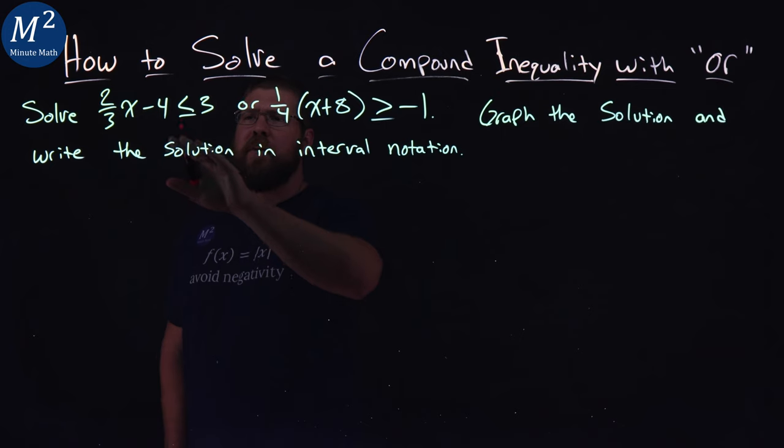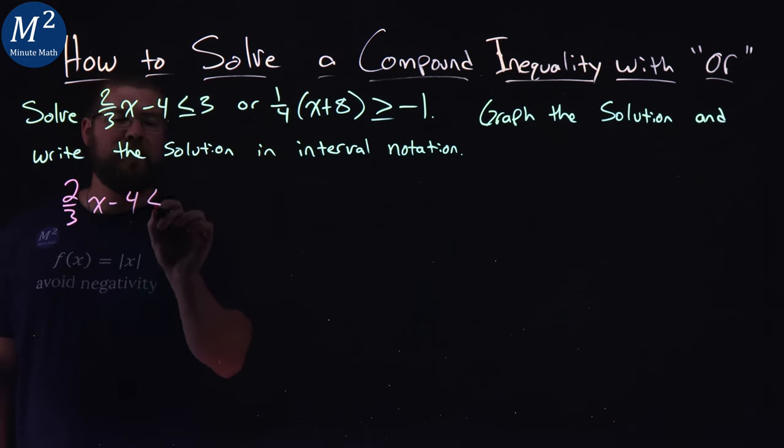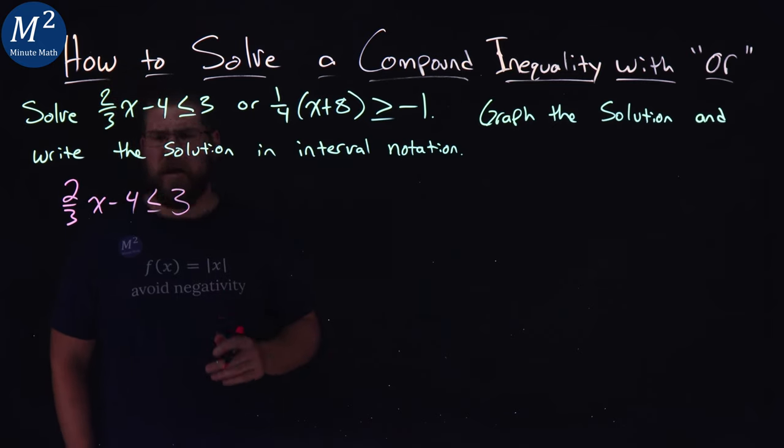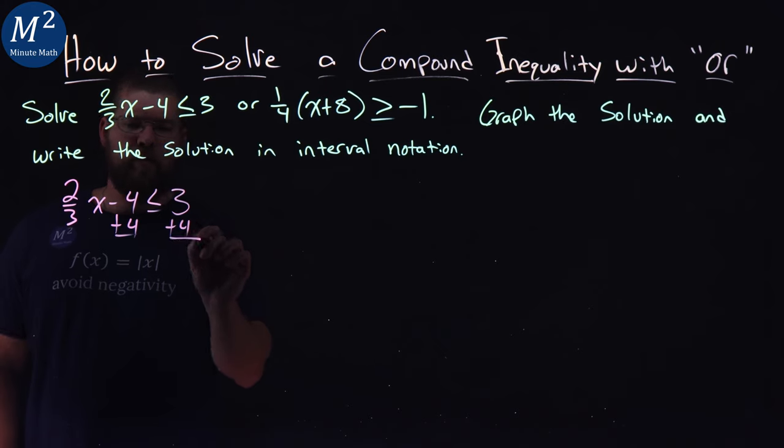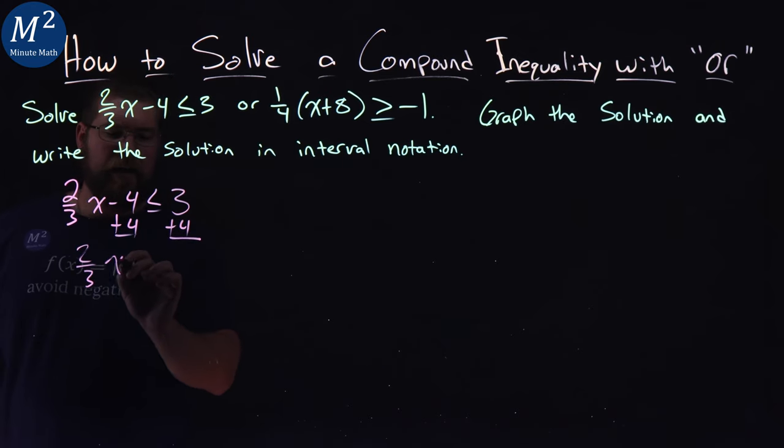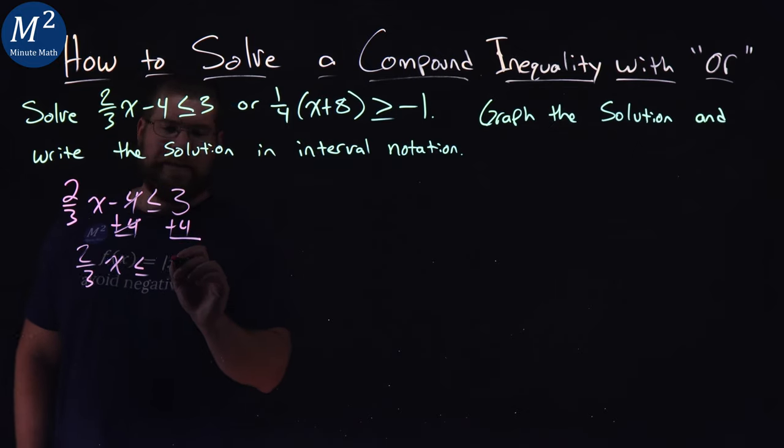Let's start with our first inequality, 2 thirds x minus 4 is less than or equal to 3. We're going to solve for x here, so I'm going to add 4 to both sides. 2 thirds x is less than or equal to, the 4s cancel, and 3 plus 4 is 7.